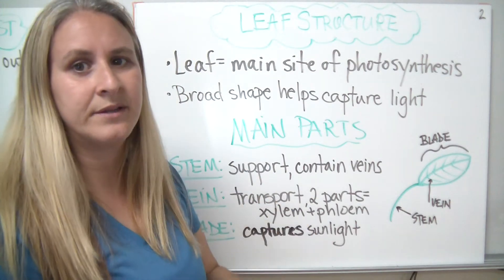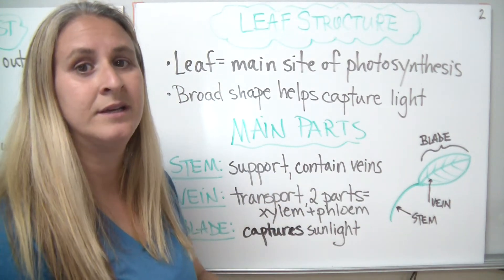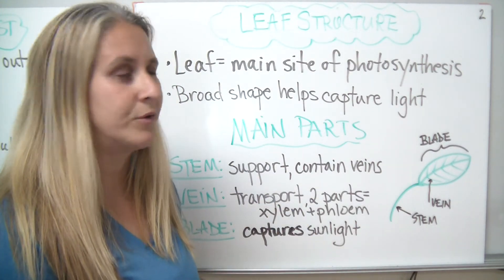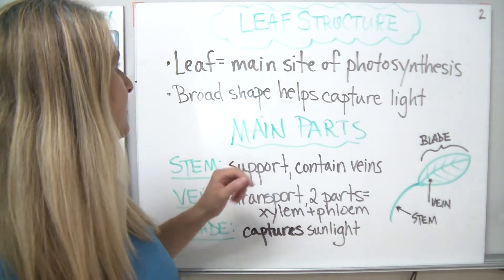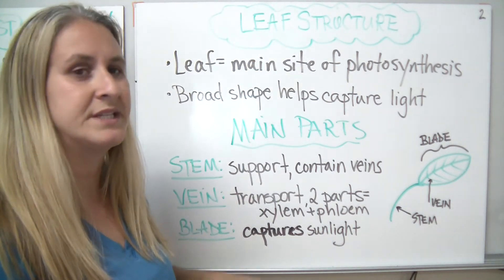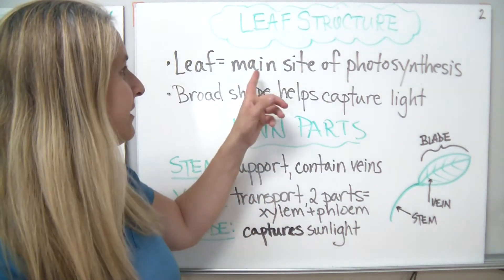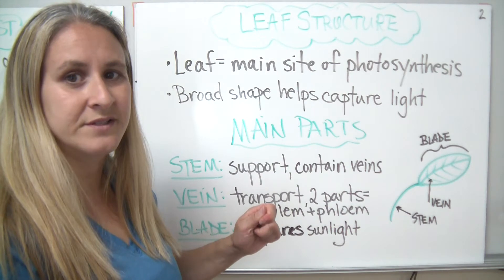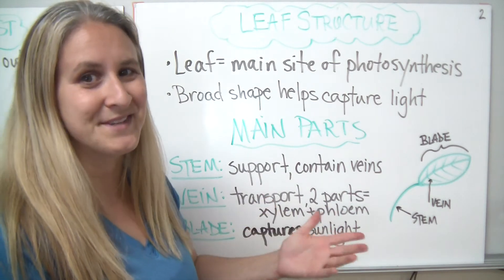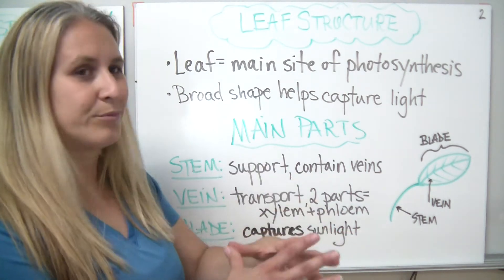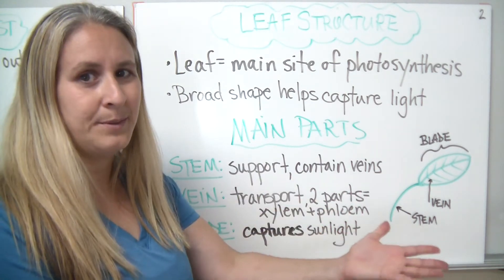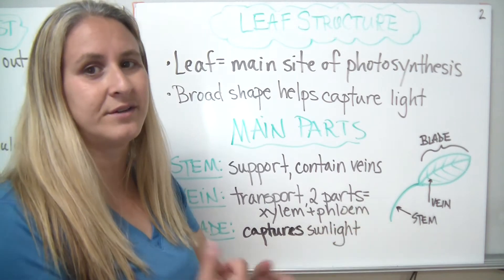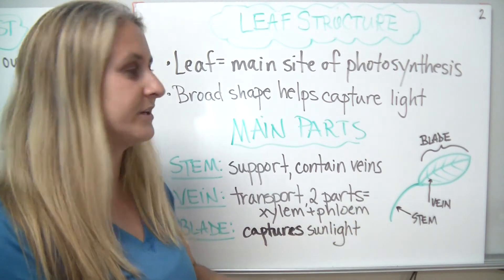Typically in a plant, the leaf is going to contain most of the chloroplasts. The leaf is the main site of photosynthesis for a plant because it has most of the chloroplasts. Its broad shape helps to capture more sunlight and gives it a little bit more surface area.